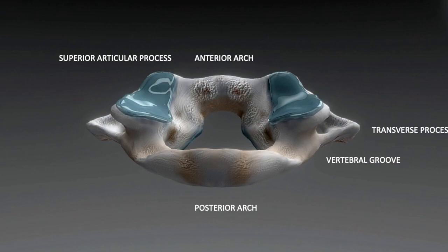They are large, oval, concave and approach each other in the front but diverge behind. They are directed upward, medially and a little backward, each forming a cup for the corresponding condyles of the occipital bone.